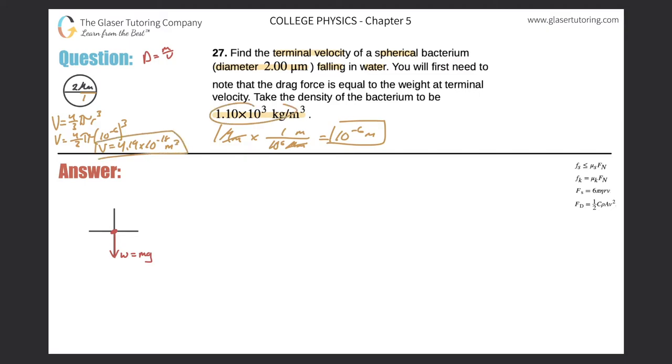So that's the volume. I found the volume, I know the density. Let's calculate the mass. So we'll use the formula. 1.10 times 10 to the third equals the mass divided by the volume, which was 4.19 times 10 to the minus 18.